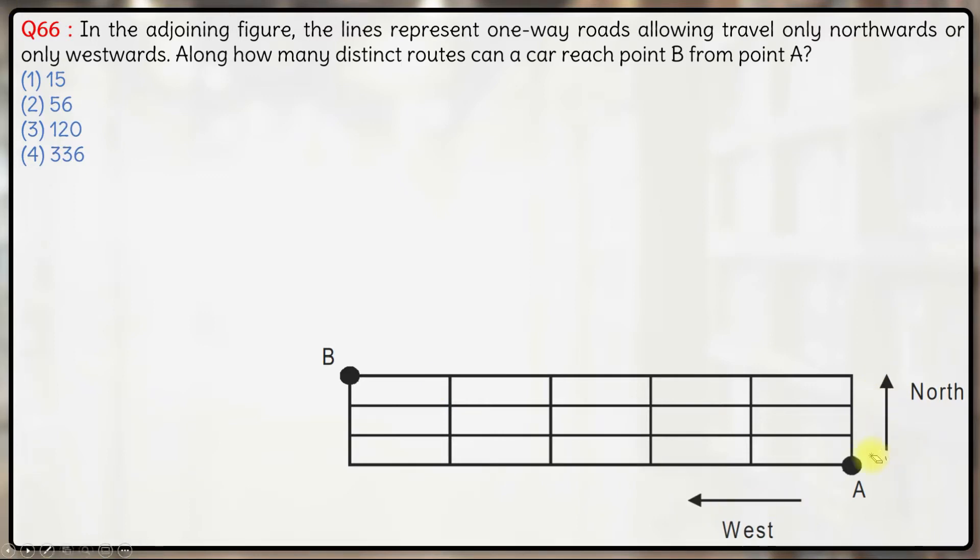So what this person will have to do is effectively the person will take three upward steps, that means three vertical steps and one, two, three, four, five horizontal or five left steps here.